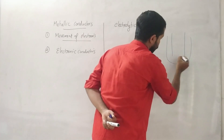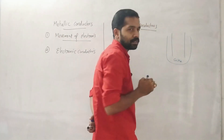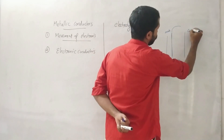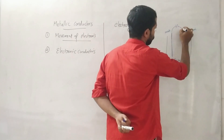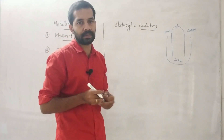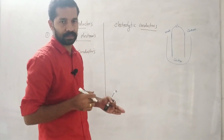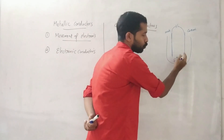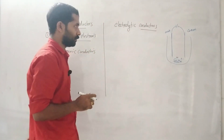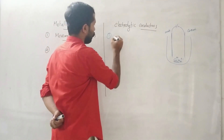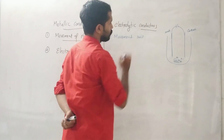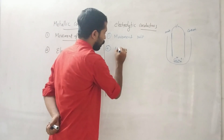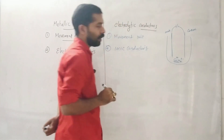Consider a copper sulfate solution with one pure copper rod as the anode and another as the cathode. In electrolytic conductors, electricity passes through the movement of ions — for example, Cu²⁺ and SO₄²⁻ ions. Conductance is due to the movement of ions, so electrolytic conductors are also called ionic conductors.